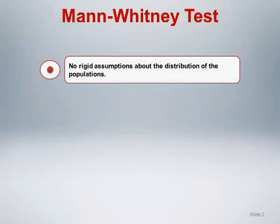As mentioned in the previous segment, non-parametric tests generally do not rely on parametric assumptions, like having a Gaussian distribution. As such, the Mann-Whitney test has no rigid assumptions about the distribution of the populations from which the data has been sampled.